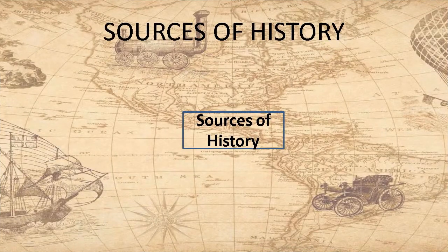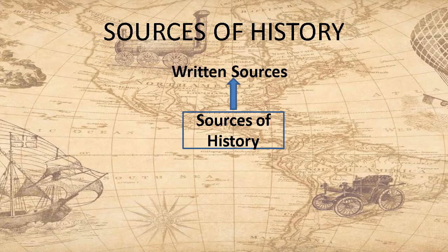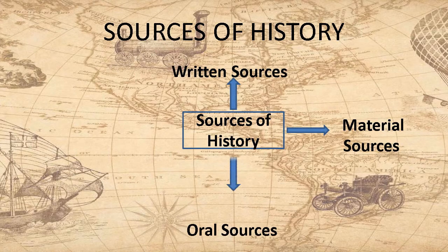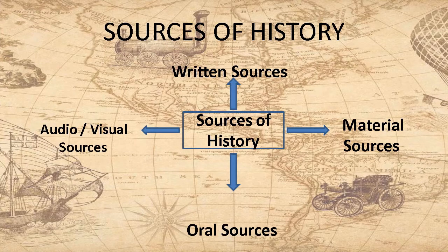Sources of modern history are different from those of ancient and medieval history. We can study history with the help of various sources like written sources, material sources, oral sources, and sources in the audio-visual medium.